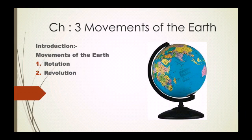Students, you have seen the different positions of the Sun at different times of the day. For example, at noon the Sun is right over our head and we feel its heat and brightness. In the evening the Sun sets in the west. These positions give us the impression that the Sun keeps moving from one corner of the sky to another — we feel like the Sun is moving and we are staying in the same place.